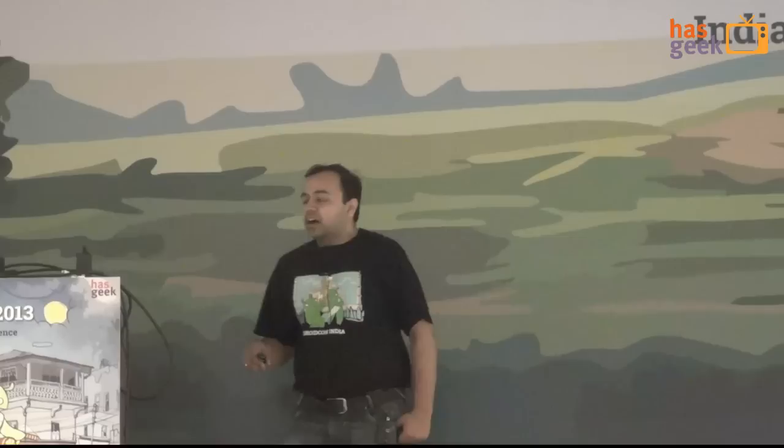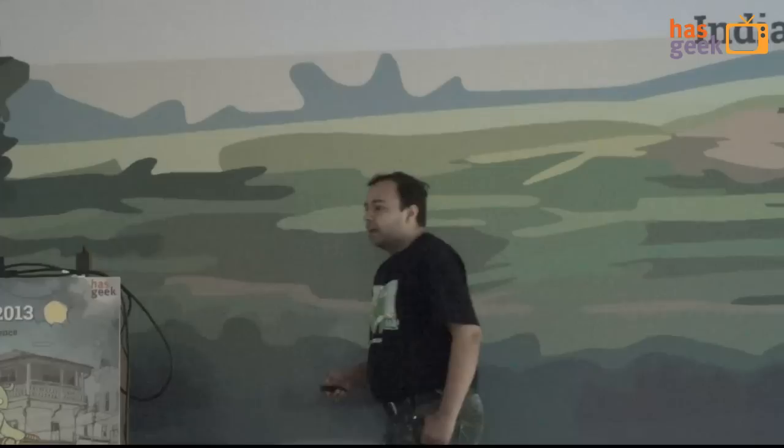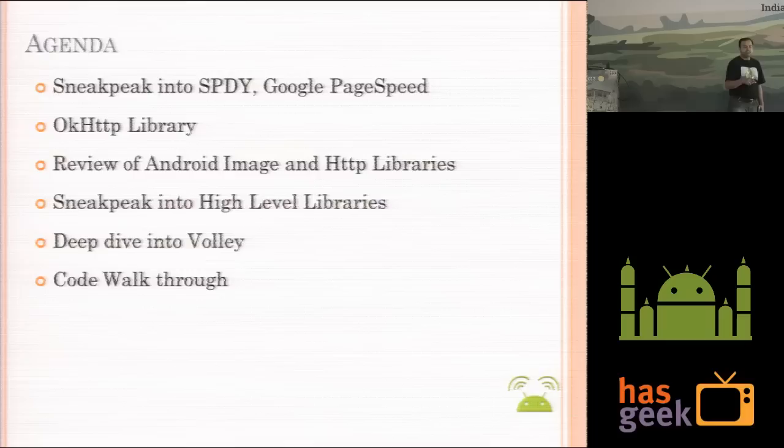Then we will review how you interact with your network in Android applications using default Android HTTP libraries. Then we'll go into how high-level libraries have been built and what boilerplate code has been built upon them. Then we'll deep dive into Volley, which was presented at Google I/O in May 2013 — a high-level networking API which includes best practices, caching, and more. We'll also do a code walkthrough of how to implement it, straight from downloading it from GitHub and integrating it in your application.